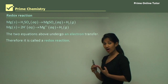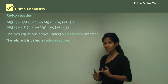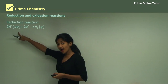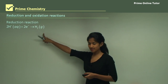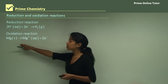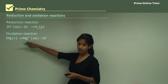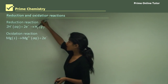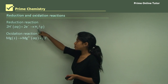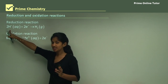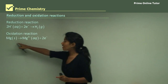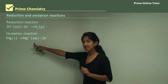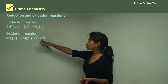What are the two half reactions happening in a redox reaction? There's a reduction and an oxidation reaction. Reduction is when a species gains an electron — here our hydrogen ions gain electrons to form hydrogen gas. In an oxidation reaction, the species loses electrons — magnesium loses electrons to form magnesium ions. Note that they always have to balance: two hydrogen ions react with two electrons, and magnesium, with a charge of 2+, loses two electrons.